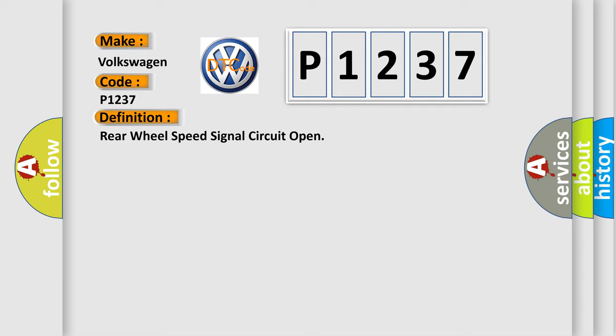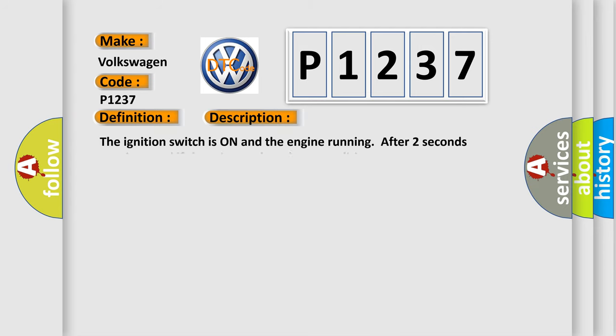And now this is a short description of this DTC code. The ignition switch is on and the engine running after two seconds starting, and if there is an under voltage condition.